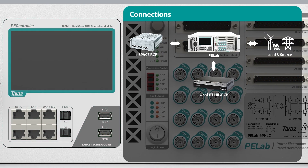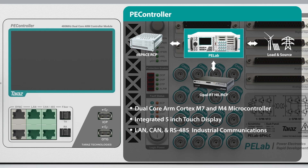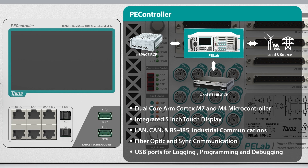The PE Lab also has an optional industrial-grade controller. The PE controller is a dual-core ARM Cortex M7 and M4 microcontroller with an integrated 5-inch touch display. Multiple industrial communication protocols such as LAN, CAN, and 485 can be used for remote monitoring and control. Fiber optic and sync communication can be used to develop distributed control systems for applications such as modular multilevel converters. The PE controller also comes with high-speed USB for data acquisition and another USB for programming and debugging.